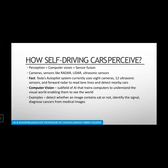The perception in self-driving cars comes from two things: computer vision plus sensor fusion. Computer vision uses cameras, and sensors like radar, lidar, and ultrasonic sensors. For example, Tesla's autopilot system currently uses eight cameras, 12 ultrasonic sensors, and forward radar to read lane lines and detect nearby cars. This is the kind of mechanism Tesla is using.